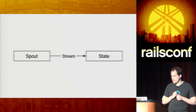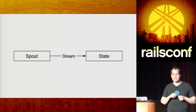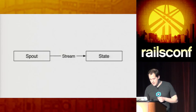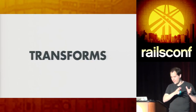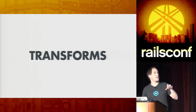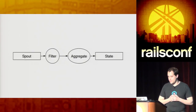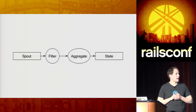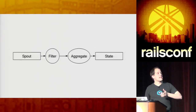So far this is what we know about Storm: we have a spout that starts the stream, data flows through it, and it ends up at the state. Transforms — the rest is really about how we transform the data as it flows through. Transforms are going to be purely functional operations on the data. Given inputs, they're going to output the same values. You can add a filter, aggregate, and the data flows through and ends up at the state and gets persisted.